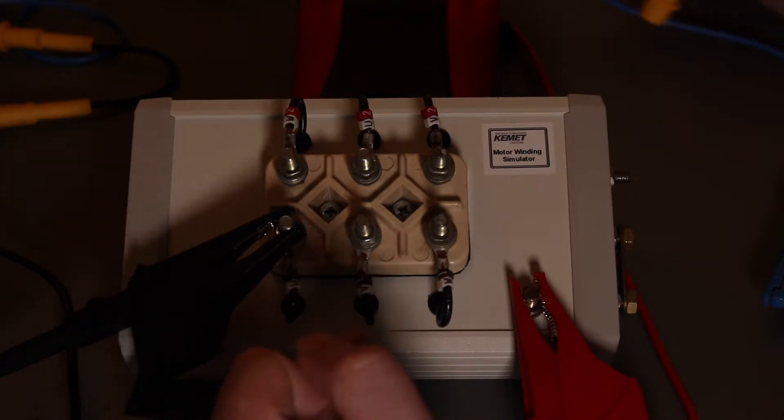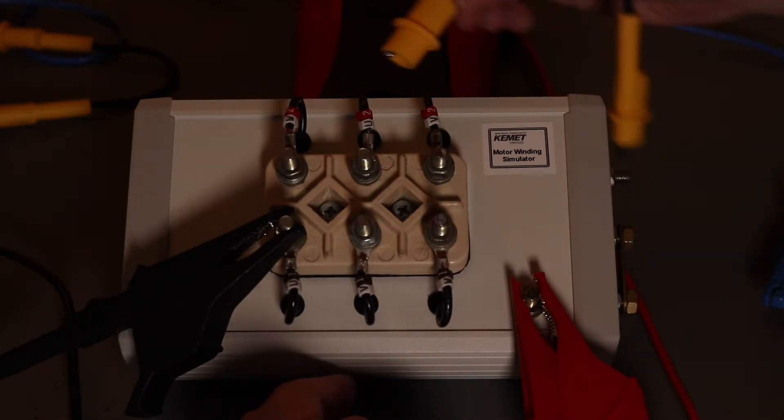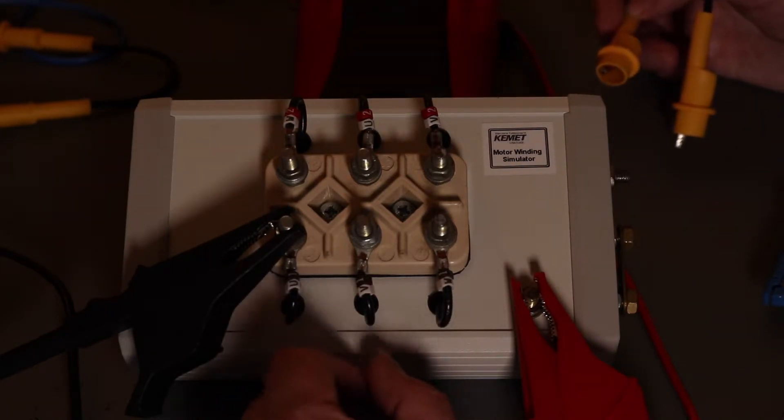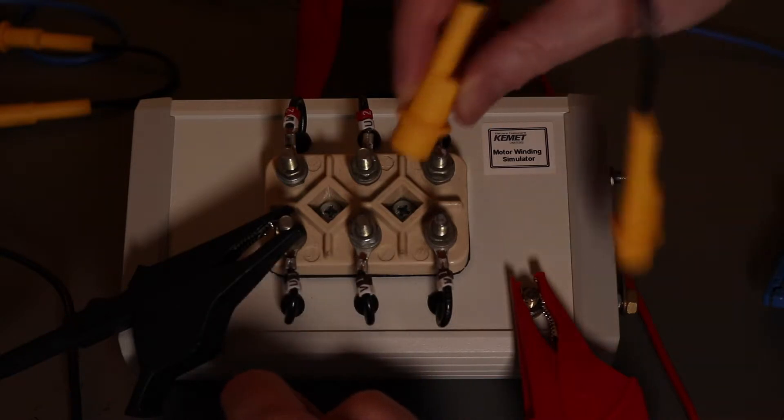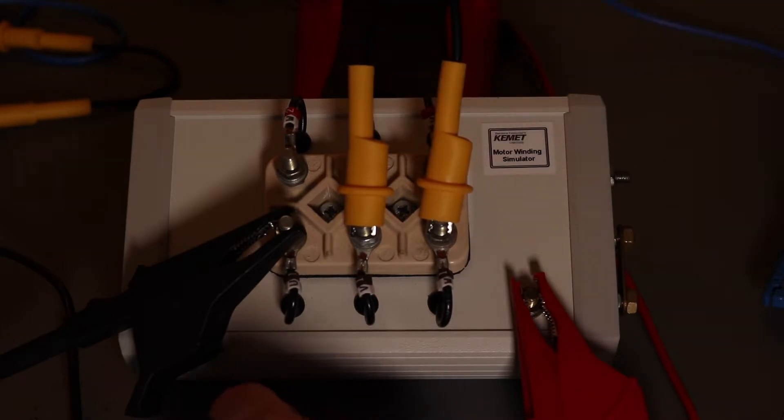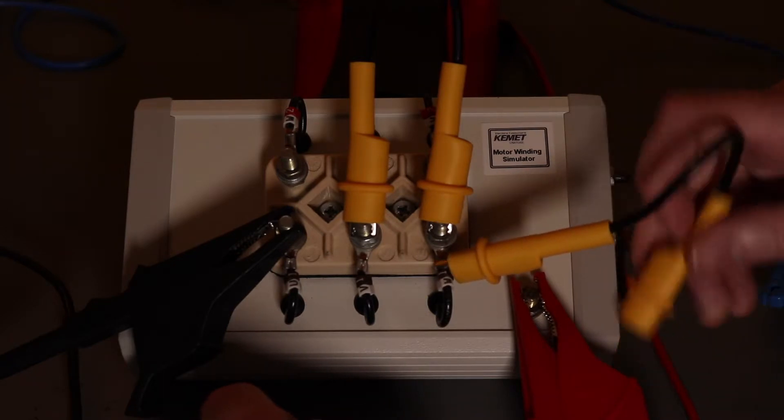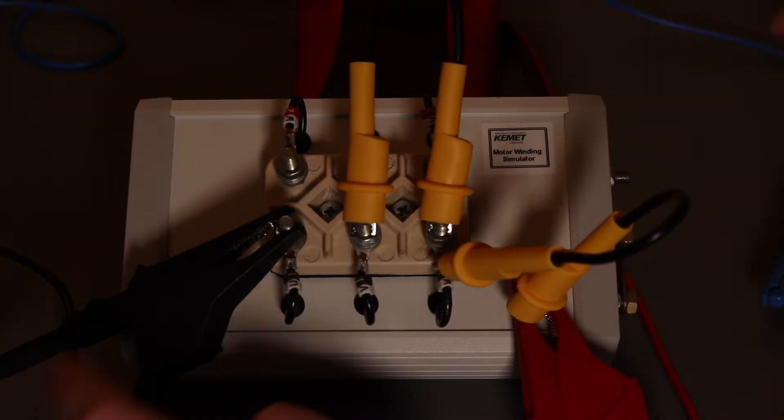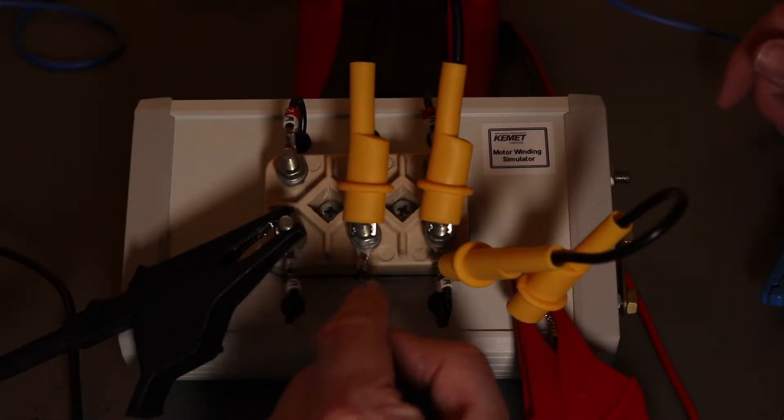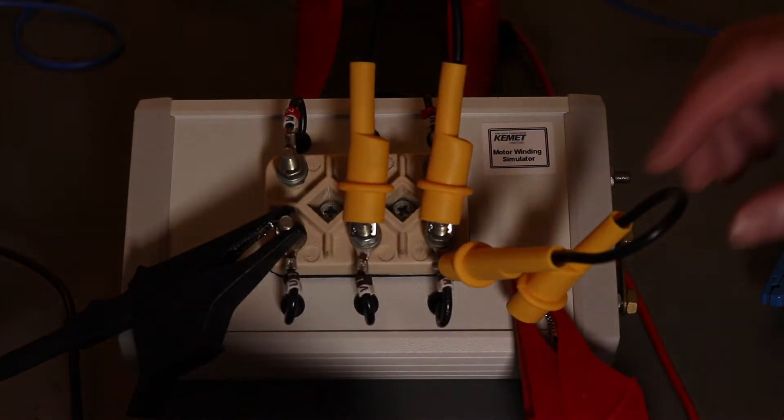This is my motor simulator setup. As you notice at this moment I've got no links across so I've got the ability to test each phase individually. When I would normally do that, I would link the two untested phases with another link and take them to earth. So then any leakage from this phase to earth is measured plus the leakage from this phase into either of these two phases, and then into earth, and I get a total insulation resistance reading.